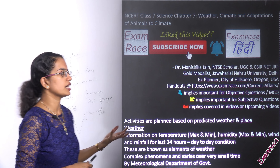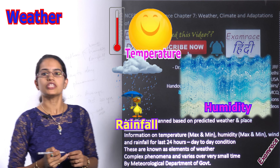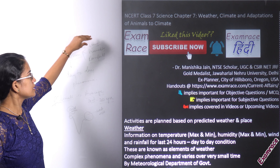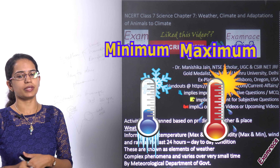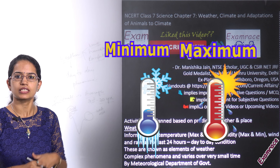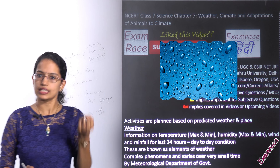Before we start with the adaptations, let's first understand the basic difference between weather and climate. When we say weather, it's a kind of day-to-day changing phenomena. The weather today is pleasant, the weather tomorrow is forecasted to be sunny — it keeps on changing. When we talk about climate, it's basically an average taken over a period of around 20 to 30 years; we consider around 25 years to be the average.